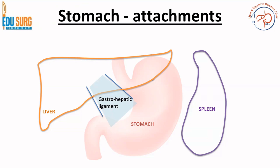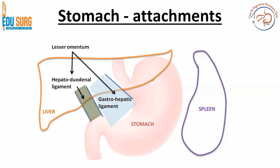The gastro-hepatic ligament, as the name suggests, attaches the stomach to the liver. The hepatoduodenal ligament attaches the D1 part to the liver. These are all basically peritoneal folds. When we combine the gastro-hepatic ligament and the hepatoduodenal ligament, it is basically the lesser omentum.